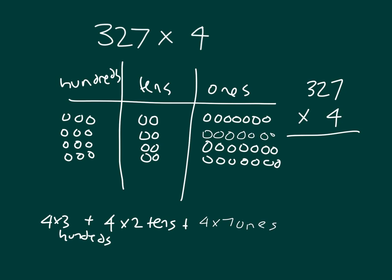Four times seven ones would be twenty-eight ones. Four times two tens is eight tens, which is worth eighty. And four times three hundreds would be twelve hundreds. And we can add them together.